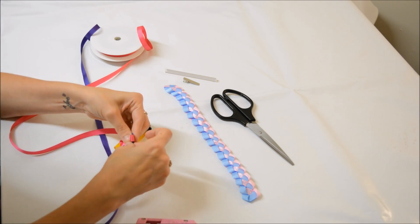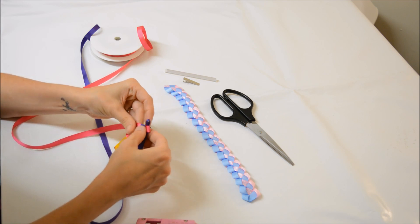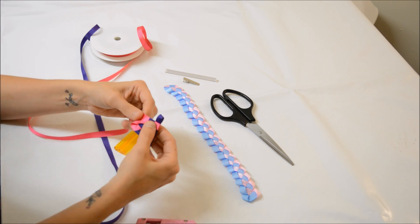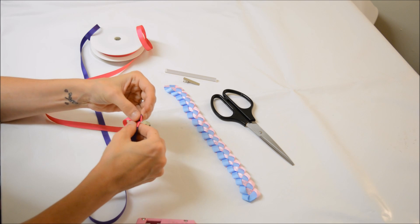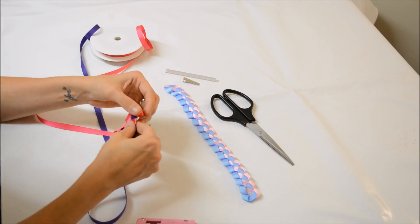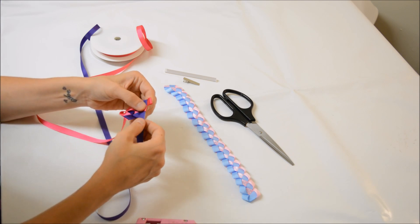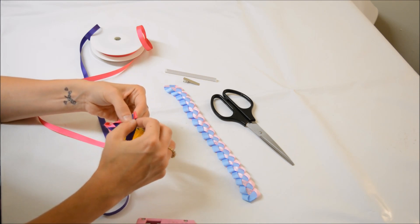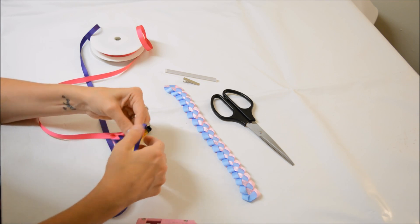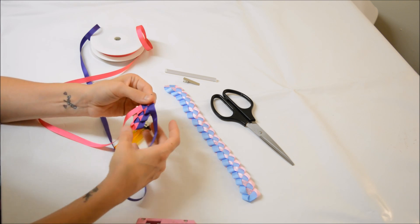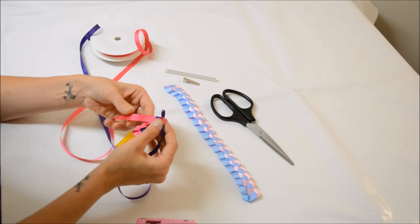Continue folding the ribbons and pushing them through, pulling tight each time. This just needs to be repeated until you have the desired length.